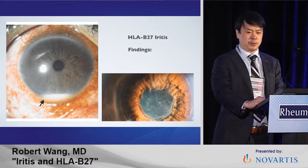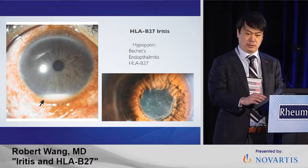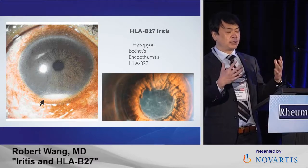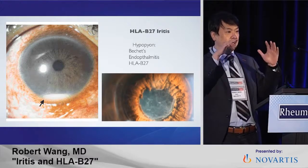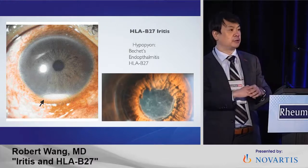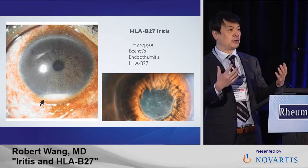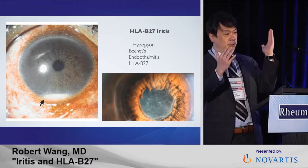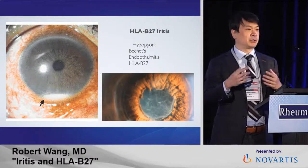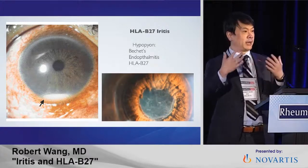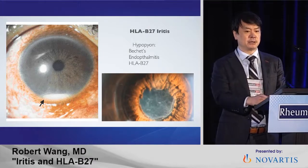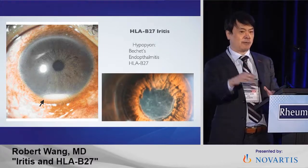A hypopion can be seen in other conditions. What a hypopion is: when the white cells are so great in the front of the eye that it deposits and makes this layer of white cells or pus flattening out due to gravity. When we look in the front of the eye with the slit lamp, we see the amount of cells in the anterior chamber, and we can count cells per high-power field and grade the flare.